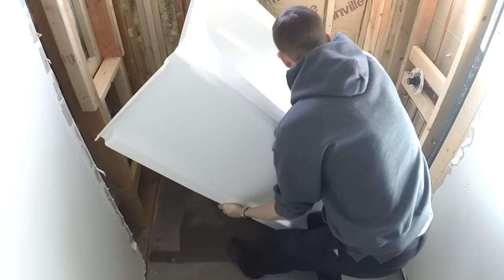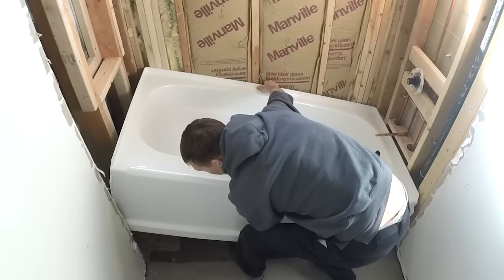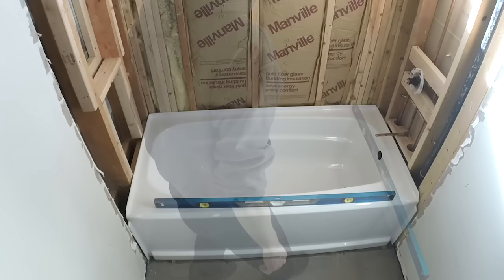Once the floor has been leveled go ahead and test fit the bathtub. If your tub is surrounded with three walls it's going to be a tight fit so purchasing a lightweight tub like the acrylic tub you see here makes the job a lot easier. Your tub should have solid contact with the ground on the entire surface and it should also be level on all four sides.